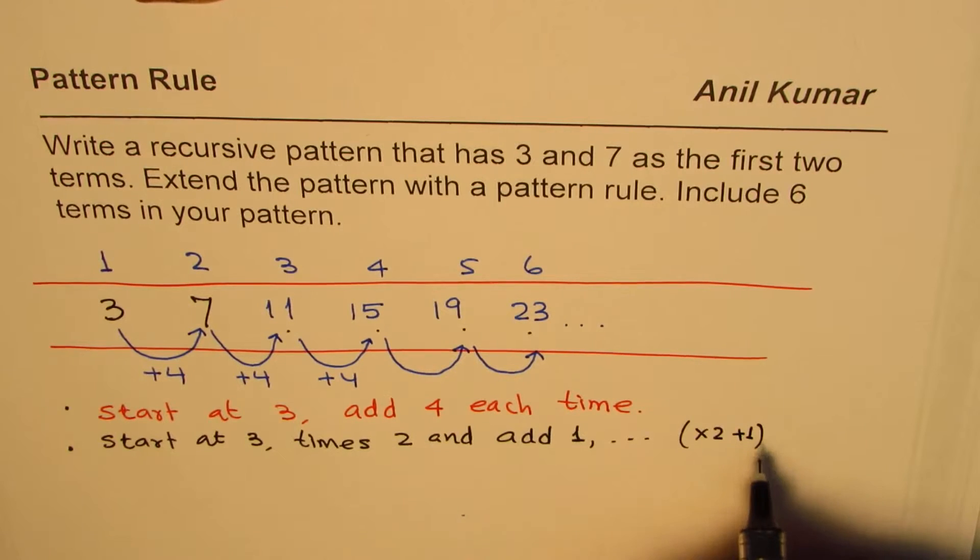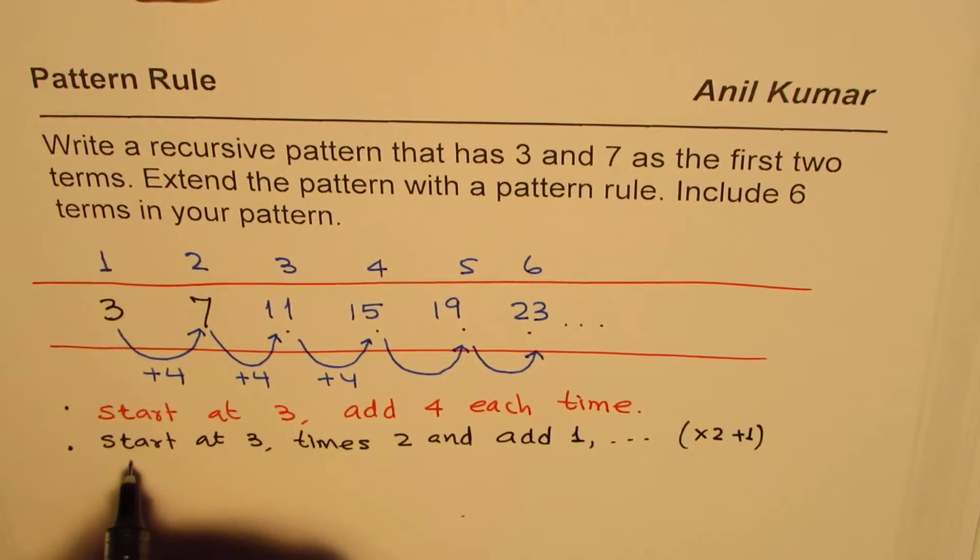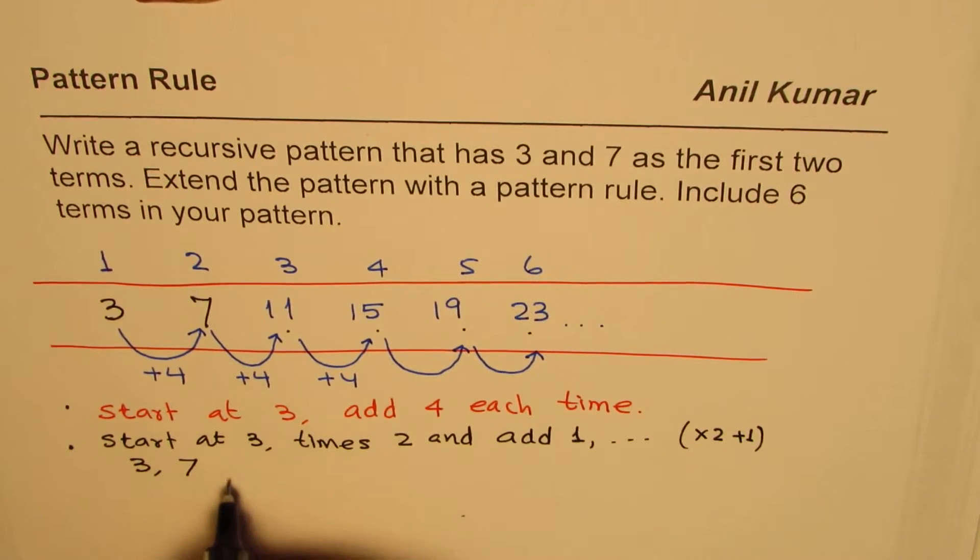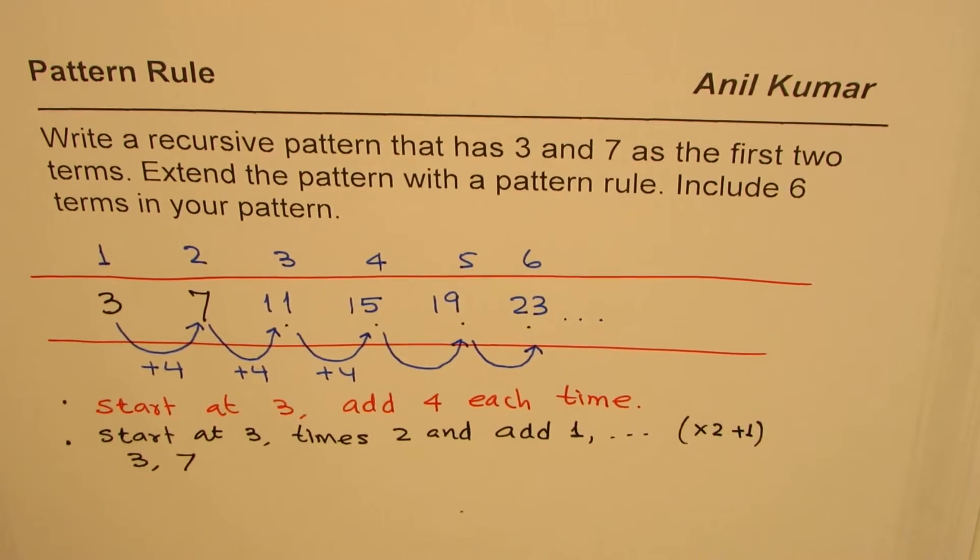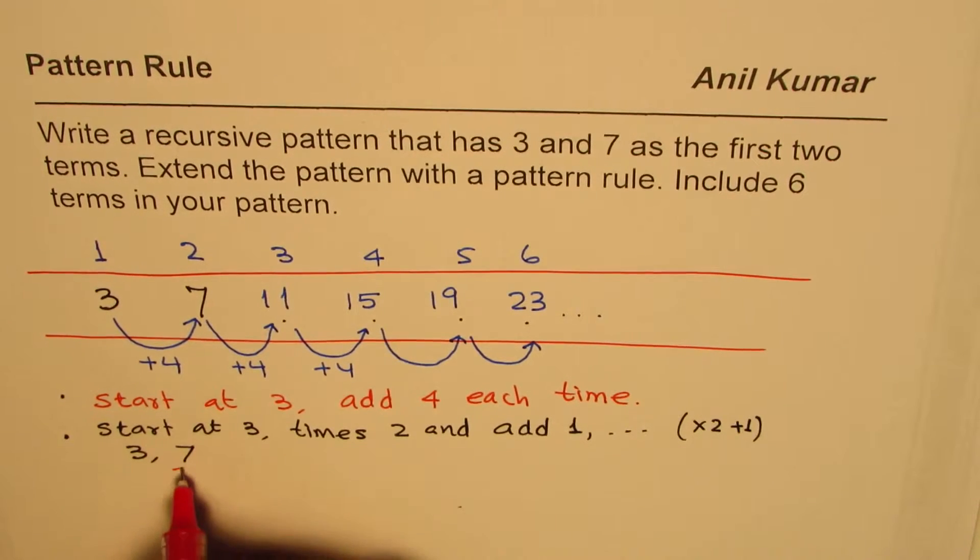So you could do times two and add one and create another pattern. I would like you to create a recursive pattern with this rule times two, add one. So we'll start at three, next number is seven. How do you get the next number? You can pause the video, answer the question, and then look into my suggestion.